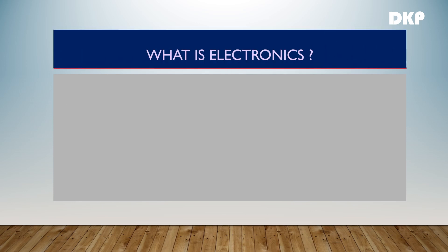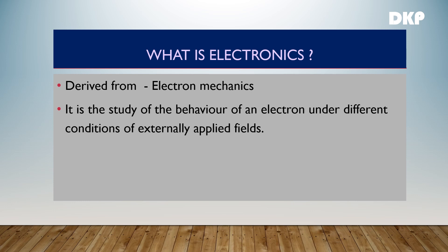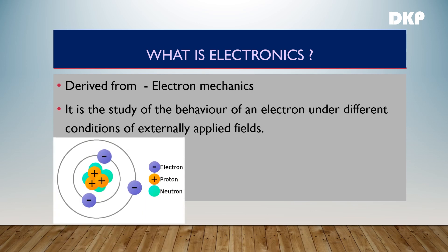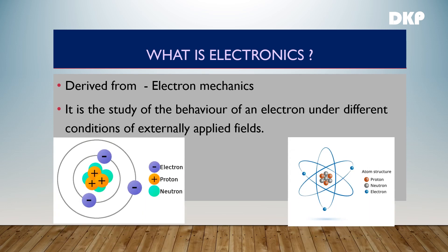Let us start with the basic question: what is electronics? The word electronics is derived from electron mechanics. Electron mechanics is the study of behavior of an electron under different conditions of externally applied fields.